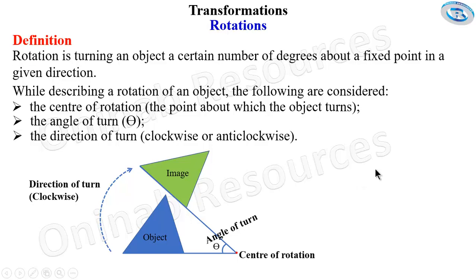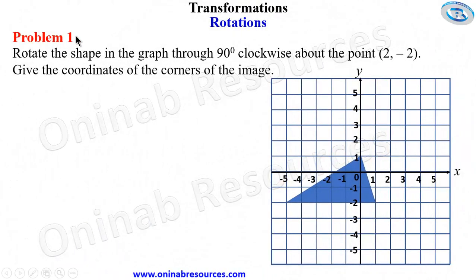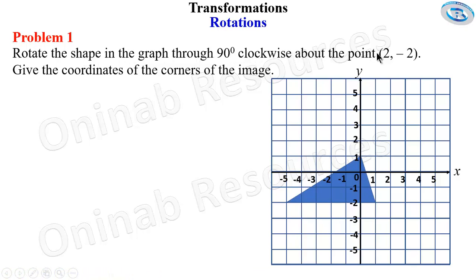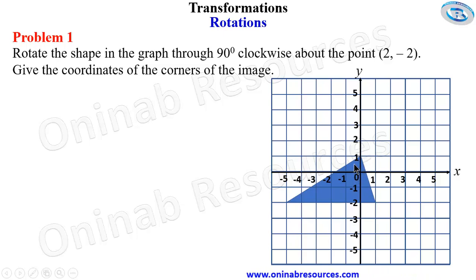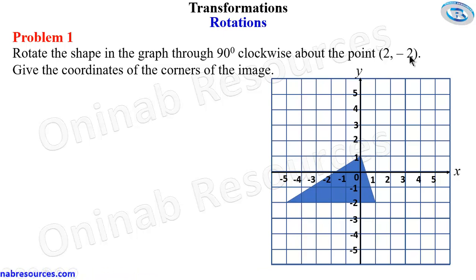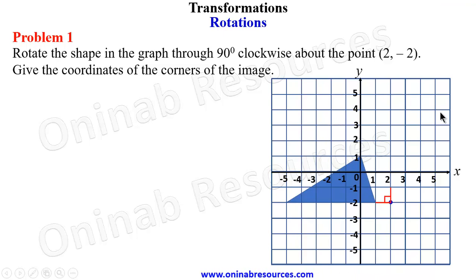Problem one: rotate the shape in the graph through 90 degrees clockwise about the point (2, -2). Give the coordinates of the corners of the image. We are going to rotate this shape; the center of rotation is (2, -2) and the angle of rotation is 90 degrees. We now form the lines — since it is clockwise, the object will be rotating in this direction.